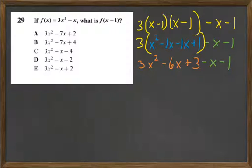Because negative 1x minus 1x is negative 2x, and 3 times negative 2x is negative 6x. And then 3 times 1 is 3.